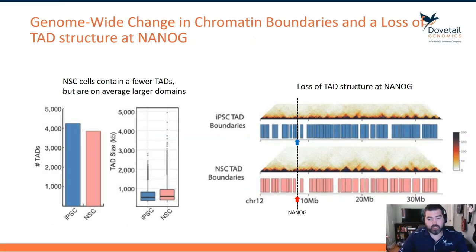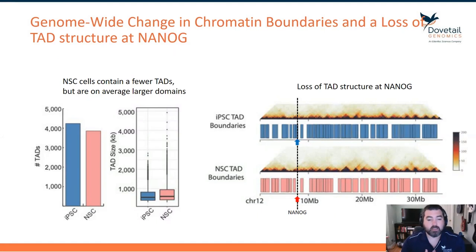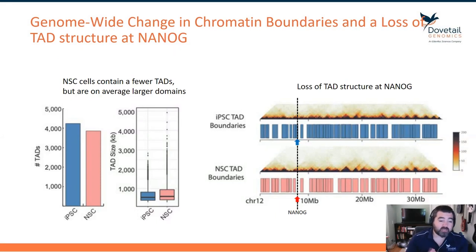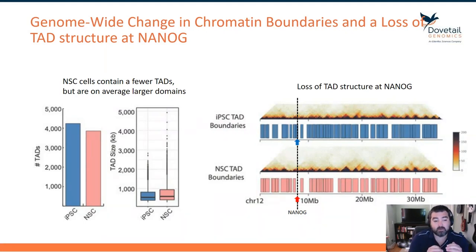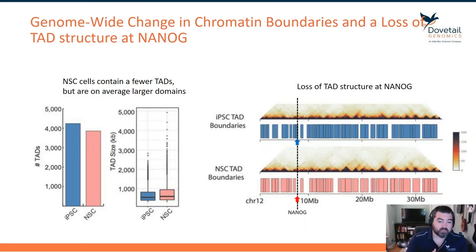First, we ask from a genome-wide standpoint what the TAD structure looks like between iPSC and NSC cells. Plotted on the left is the total number of TADs called at 25 KB resolution. We can see that iPSC cells contain more TADs — slightly over 4,000 — whereas in NSC cells there are fewer than 4,000 TADs being called.